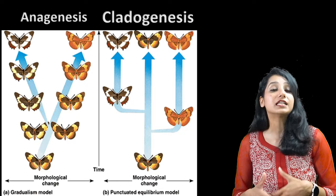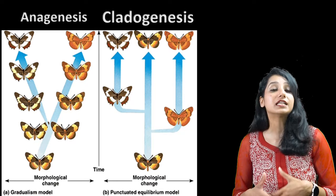The condition of cladogenesis corresponds to punctuated equilibrium. I hope you can now understand the difference between micro evolution and macro evolution. If you liked this video, please share it with your friends. Thank you so much, bye bye.